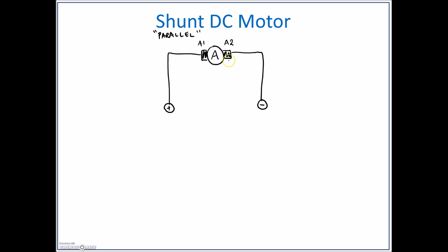Okay, so that's our inside magnet. Now we need our outside magnet. So our outside magnet is the shunt, and the labels on the shunt are F1 and F2. And that's it. That's our parallel DC motor or shunt DC motor.